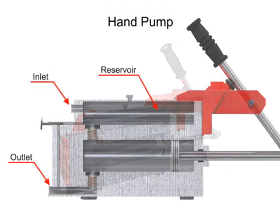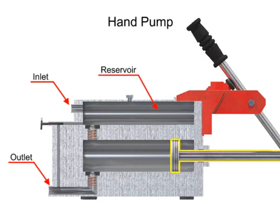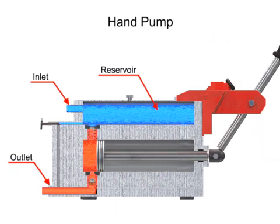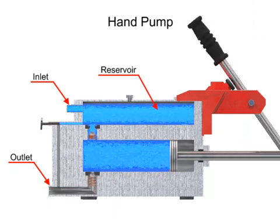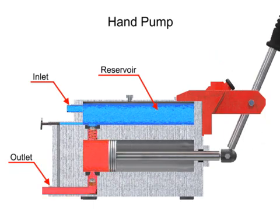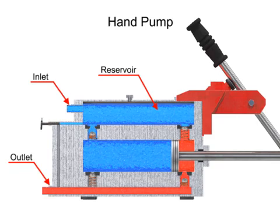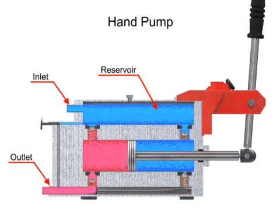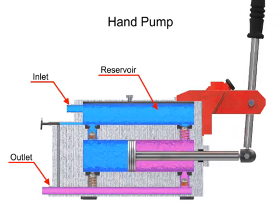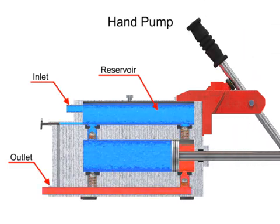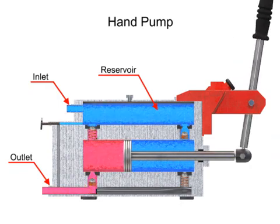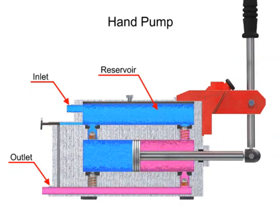Hand pumps are always of piston type and are usually constructed with a piston working between two check valves. Double acting hand pumps are more efficient, allowing fluid to both enter and discharge on both strokes of the piston. Moving the pump handle in either direction allows fluid to be drawn in from the reservoir and discharged via the outlet ports.